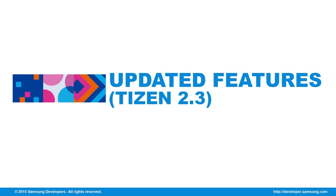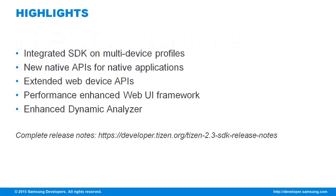Tizen 2.3 has improved features: integrated SDK on multi-device profiles, new native APIs for native applications, extended web device APIs, performance-enhanced web UI framework, enhanced dynamic analyzer, and modified IDE features and tools. You can check the complete release notes of Tizen 2.3 at developer.tizen.org/tizen-2.3-SDK-release-notes.